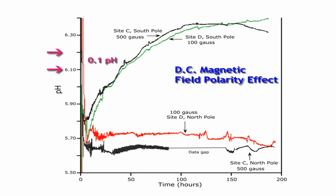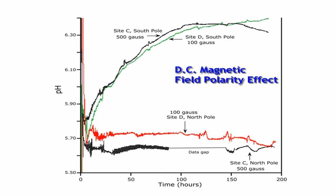Here I've plotted the pH of a vessel of water in the vertical direction versus time in the horizontal direction. The experiment being carried out is to place a simple disc-shaped ceramic magnet under this vessel of water with one pole pointing upwards and measure for the next three to five days. Then just turn it over so the opposite pole faces the water and measure for another three to five days.